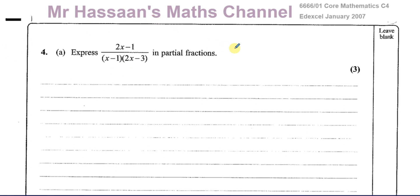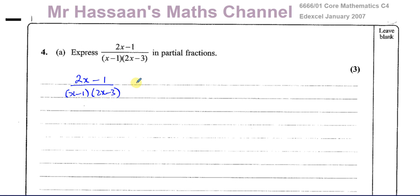Here we're asked first to express this fraction in partial fractions, which means we have to split it up into separate fractions. We've got 2x minus 1 over (x minus 1)(2x minus 3). We have a denominator made up of a product of linear factors — they're both linear factors — so when you split this into partial fractions, it splits up into two fractions. Before we start, we must check whether this is a proper or improper fraction first.